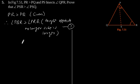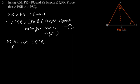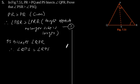It is also given in the question that PS bisects angle QPR. Therefore, angle QPS is equal to angle RPS. Let's call this equation two.